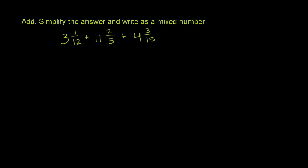3 and 1/12 plus 11 and 2/5 plus 4 and 3/15. We've already seen that we could view this as 3 plus 1/12 plus 11 plus 2/5. This is the same thing as 3 plus 1/12 plus 11 plus 2/5 plus 4 plus 3/15.